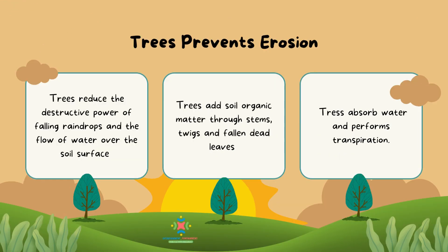Trees Prevent Erosion. Trees reduce the destructive power of falling raindrops and the flow of water over the soil surface. Trees add soil organic matter through stems, twigs and falling dead weeds. Trees also absorb water and perform transpiration.